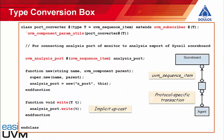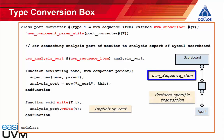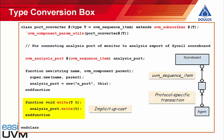Now let's take a quick look at the type conversion box. The type conversion box is a hack to convert from a protocol-specific transaction type to the type UVM sequence item as required by the generic scoreboard component. It is simply a UVM subscriber that takes a protocol-specific transaction type, implements the write method for the incoming transaction, and does an implicit upcast to convert that transaction to type UVM sequence item, which is the type of the outgoing analysis port. It's a very straightforward UVM subscriber component to convert a transaction of one type to another.